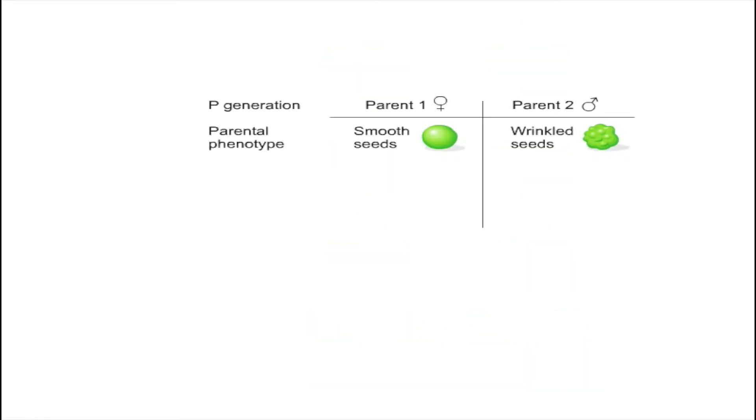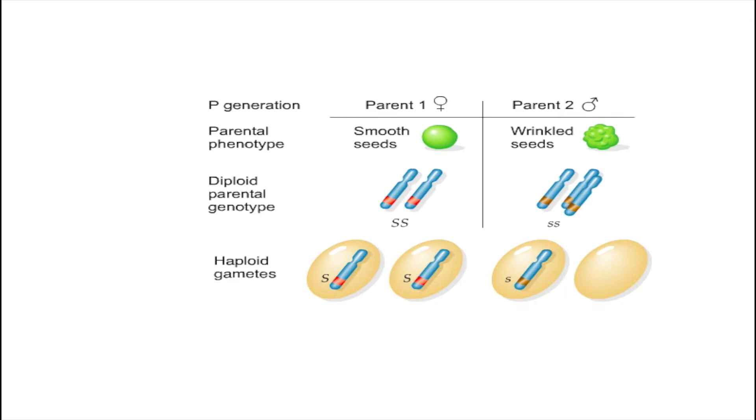Mendel theorized that traits are controlled by factors that occur in pairs. Thus, the true breeding parental plants can be designated as shown: big S, big S for the smooth seed plant, and little s, little s for the wrinkled seed trait. When the plants make sex cells, these factors separate with equal likelihood into the pollen or ovum. These factors then combine in the offspring.